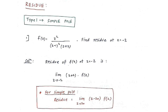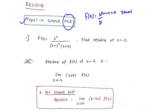In this video we will understand about residue of a function. Let us start with Type 1, which is simple pole. Now, if you have a function f of z in numerator/denominator format, putting the numerator equal to 0 gives zeros of the function, and putting the denominator equal to 0 gives the poles of the function. There are two types of poles: simple pole and repeated pole.